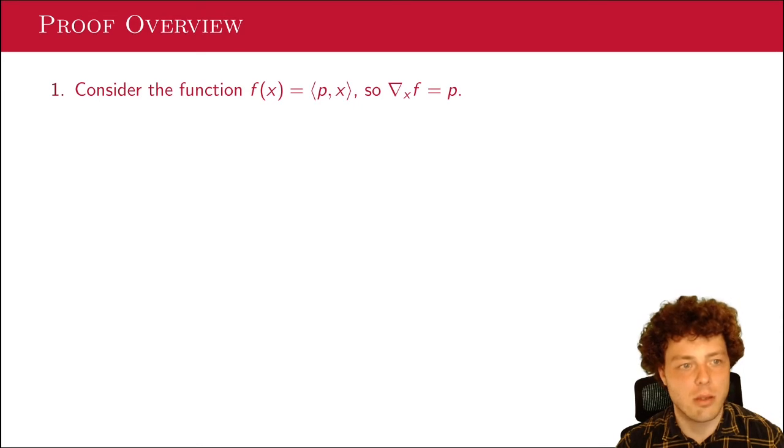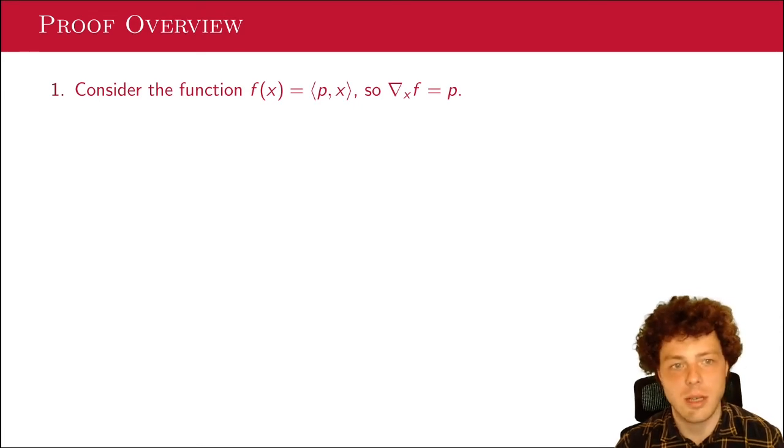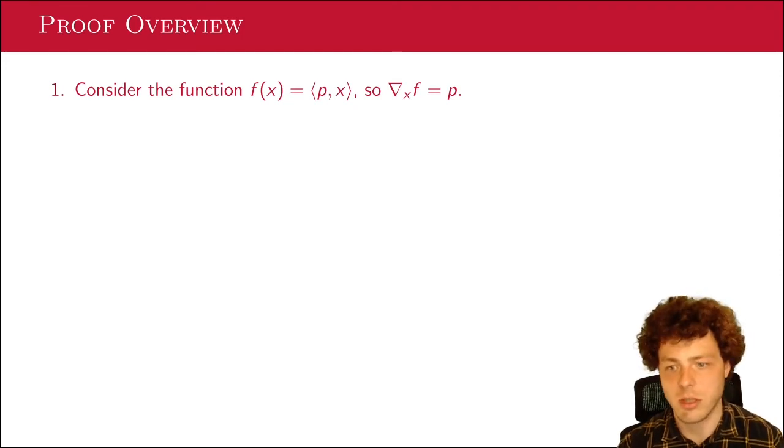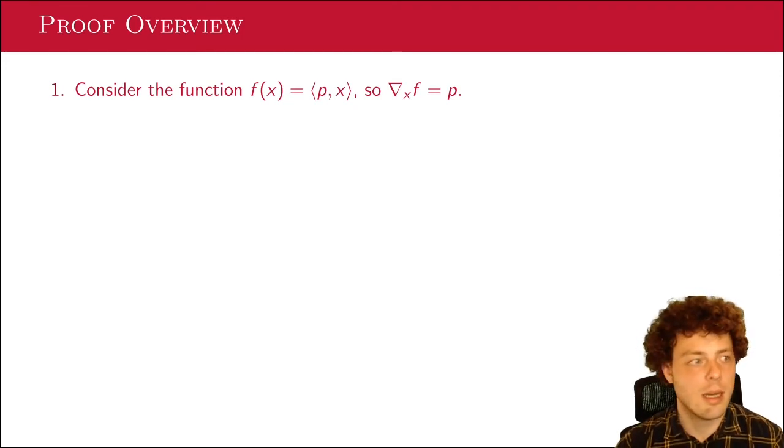And it says that we can get an approximation P tilde in L infinity norm up to error epsilon and with error probability at most delta using log n over delta over epsilon applications of O_P and its inverse. So compared to the classical algorithm, which would be just applying O_P and measuring a lot of times, this is a quadratic improvement. Okay, I'll try and convince you that this main theorem is true and the proof is actually rather clean.